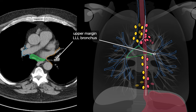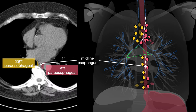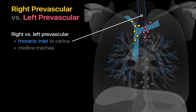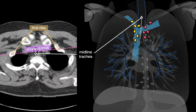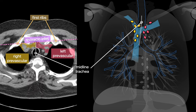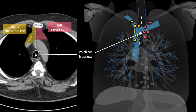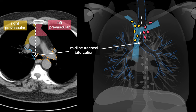Once you reach the left lower lobe bronchus origin, the right-left mediastinal boundary reappears along the midline esophagus. Prevascular lymph nodes in the anterior mediastinum exist from the thoracic inlet to the carina, with the midline trachea used to distinguish right from left prevascular nodes. On CT, you'll encounter prevascular lymph nodes anterior to the carotid artery on the left and the SVC on the right, and the prevascular station ends at the level of the carina.